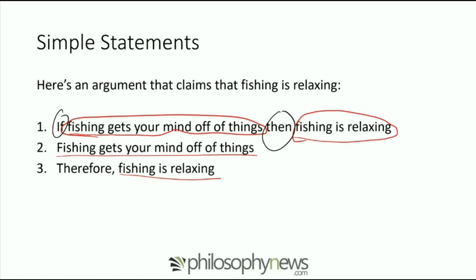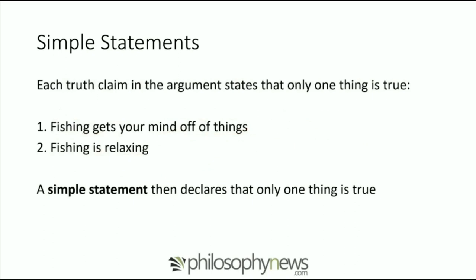When you look at what a simple statement is, we're taking the concept of statement and specifying it a little bit. A simple statement just declares that one thing is true — that's what makes it simple. Each of the two claims in that argument is making a single statement of fact. When you think about a simple statement, keep in mind it's a concept that makes only one truth claim. In logic, the statements you're using are often complicated. So what you want to do when constructing arguments is take complex ideas and reduce them to simple ideas by putting them in the form of a simple statement.